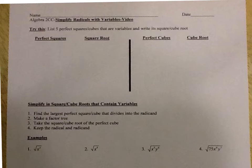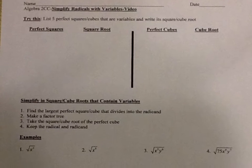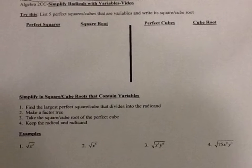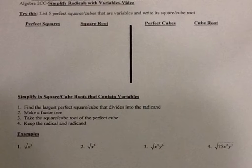What we're going to work on today is simplifying square roots and cube roots that have variables in them. So to try this, list five perfect squares and perfect cubes that have variables, and then write the square and cube root of each.